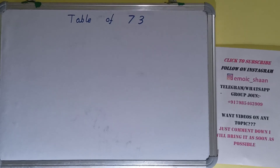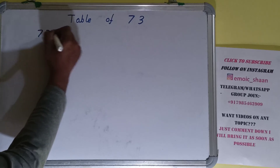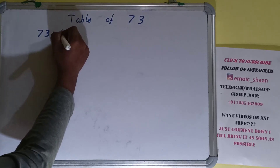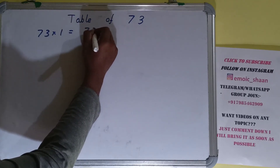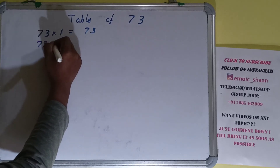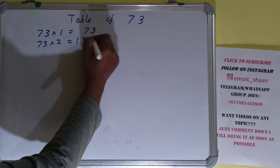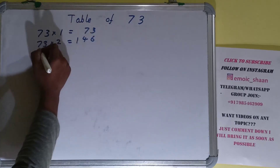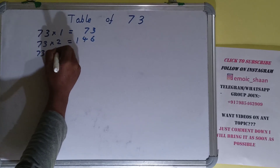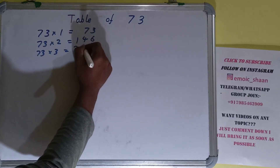Hello friends, and in this video I'll be helping you with the table of 73. So let's start. 73 into 1 is 73. 73 into 2 is 146. 73 into 3 is 219.